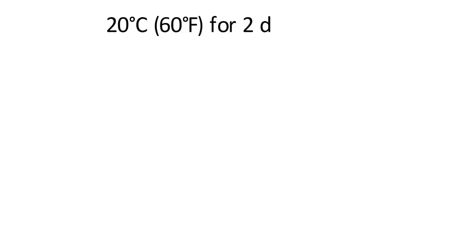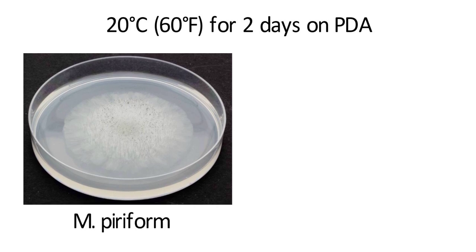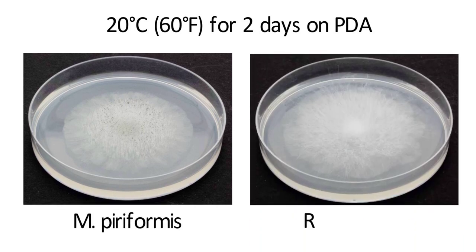First, colony morphology on potato dextrose agar media. At 20 degrees Celsius for two days, both fungi grow very quickly. Sporangiophores of Mucor piliformis erect straight and start to produce sporangia around the center of the media. For Rhizopus stolonifer, the presence of sporangia is not obvious at this point, and mycelia weave around on the media.